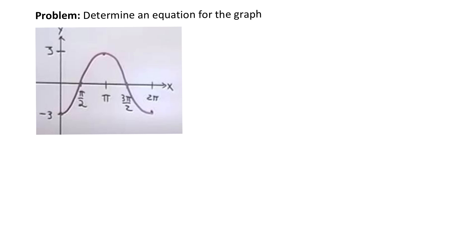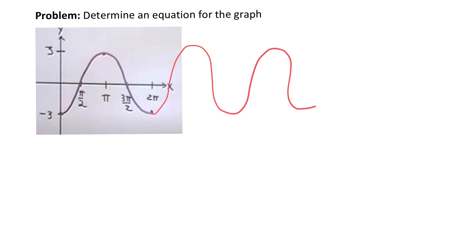In this video we're going to look at taking graphs of trig equations and turning them back into functions or equations. So let's look at this one. We have the graph of what appears to be a trig function. It looks like a wave, although we only have one section of it. But we could imagine this wave continuing on and on like this — it looks like a sine or a cosine graph. But what's the equation for the graph?